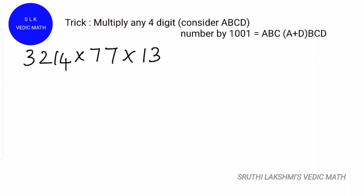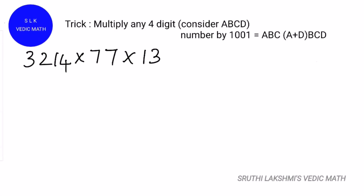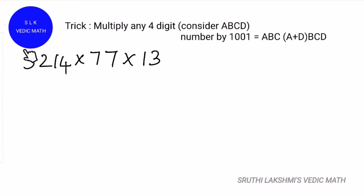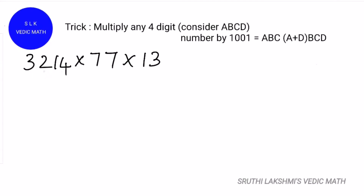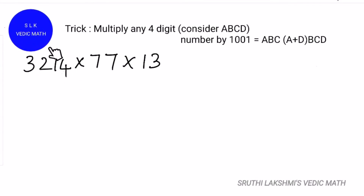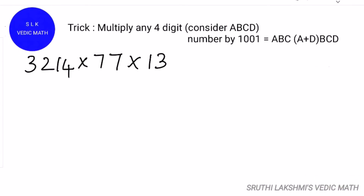Now we are going to multiply a 4-digit number by 1001. The answer should be: the first three digits of the number, then the sum of the first and the last digit, then write down the last three digits of that number.